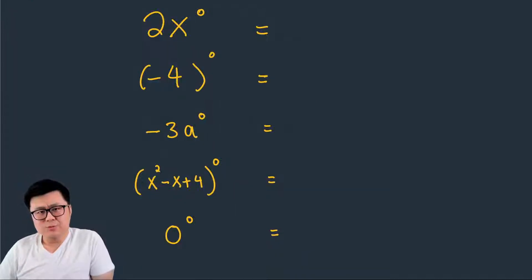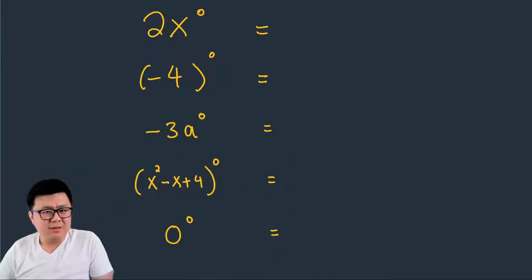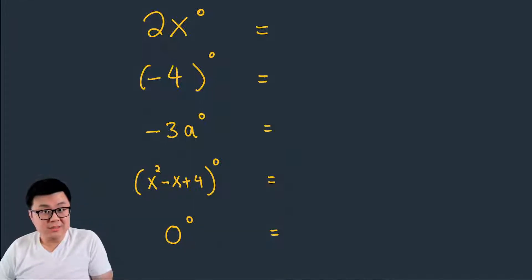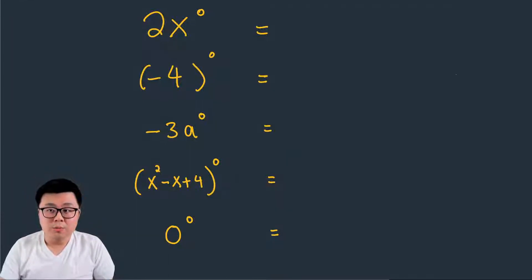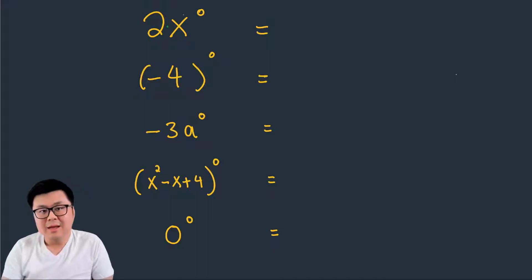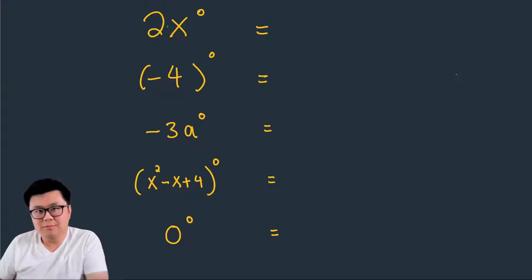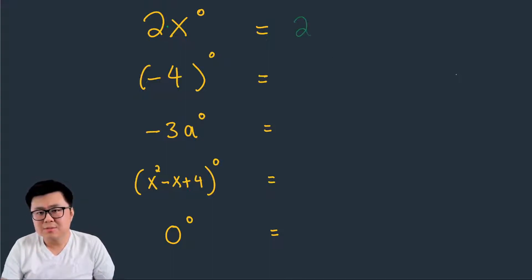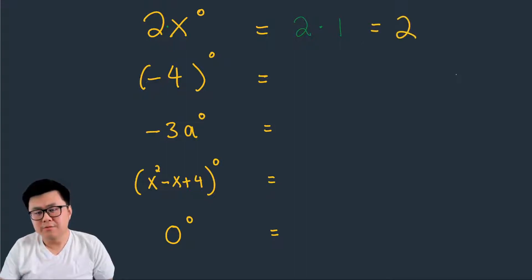Well, not so quick. Let's look at 2x to the power of zero. Notice the two is not in a bracket, which means it's a coefficient in front of the x — or you can think of it as its own base with an exponent of one — so it has nothing to do with the x to the power of zero. It's really two times x to the power of zero. Since x to the power of zero equals one, this becomes two times one, which gives us an answer of two.